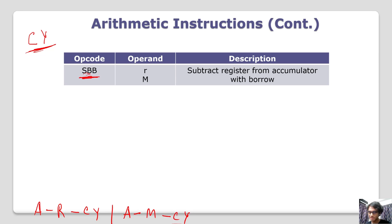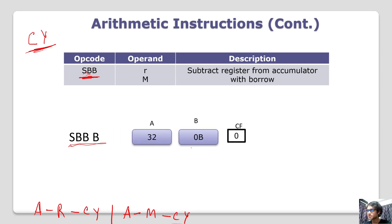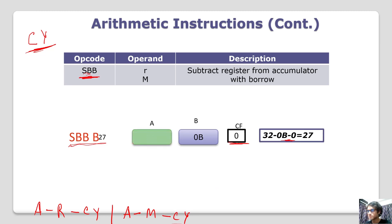The result is 11, and the result is 10. SBB is B — I am going to the B register. The carry flag is 0. The result is 27. The carry flag is 0. The result is 26.